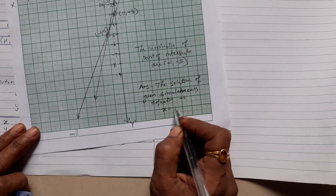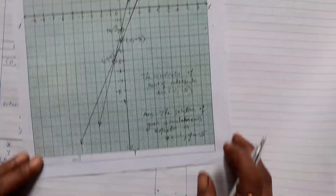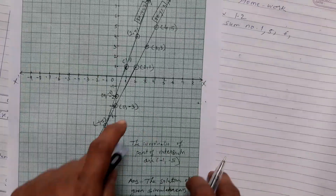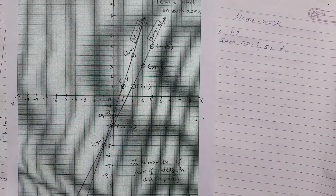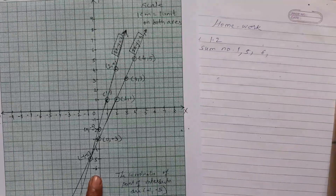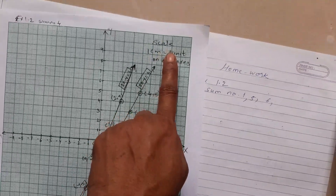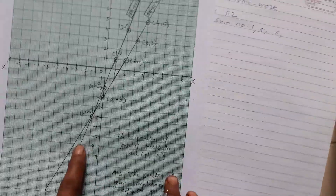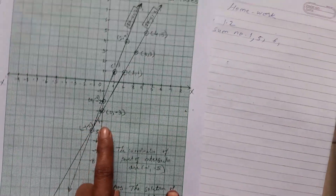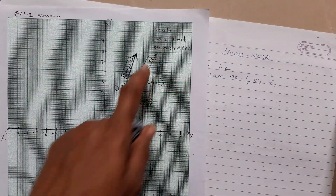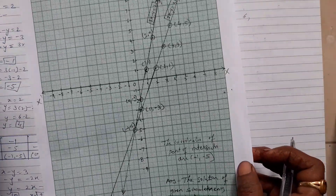The solution of the given simultaneous equation is x = -1, y = -5. While drawing the graph, first draw the x-axis and y-axis, then plot the points, and compulsorily write the scale before you start plotting points from your table. Don't forget to write the scale.